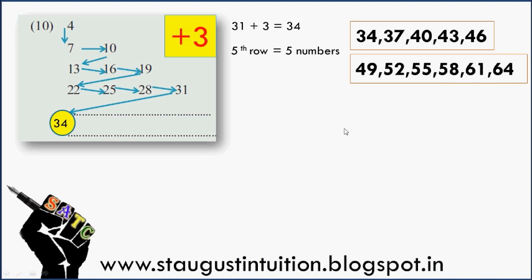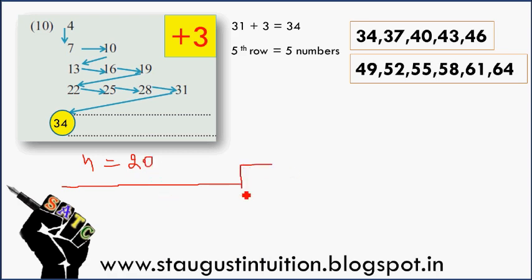We have to take a look at the first part. The second part is a little difficult — this is the term in the line. The second part is finding the first and last term. We have to use the formula for the second half. The formula is: xn equals rdn plus f minus d.